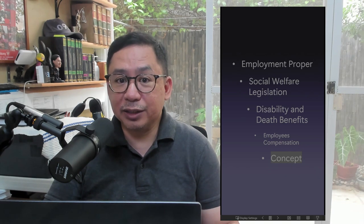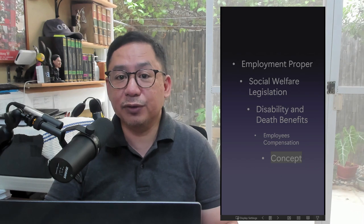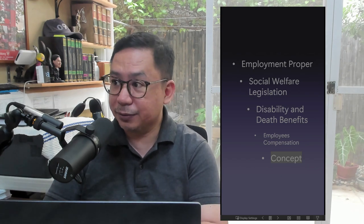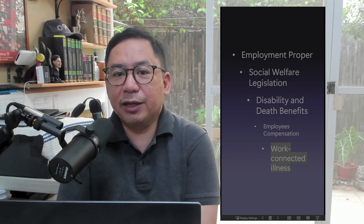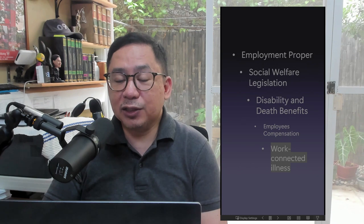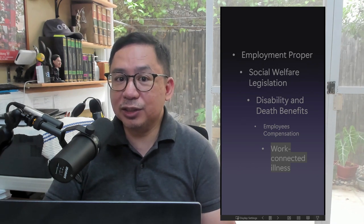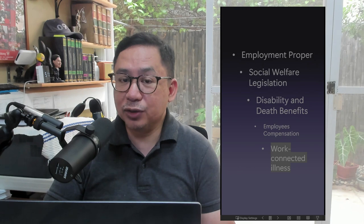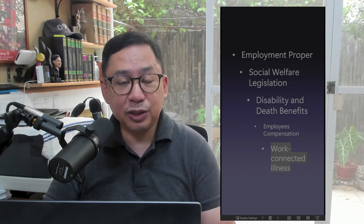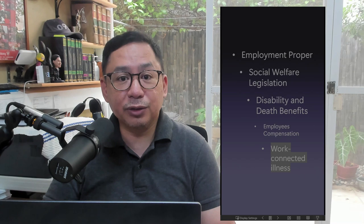Thus, even if work-connected, the injury or illness will not be compensable if it did not result in disability or death. When is an illness work-connected? An illness is work-connected: one, if it is classified as an occupational disease; or, two, if not classified as an occupational disease, the risk of contracting the disease was increased by the working conditions.